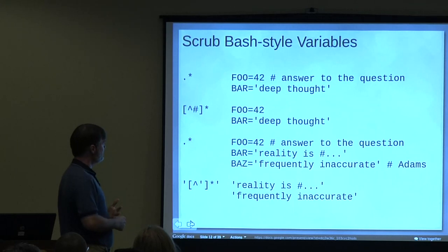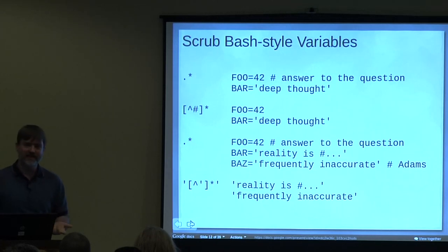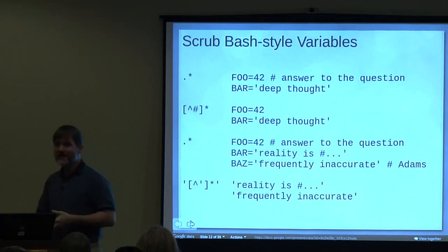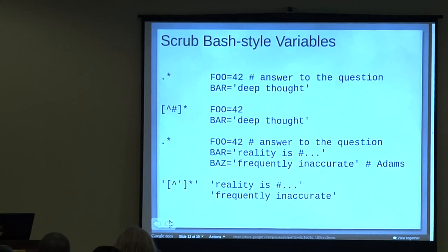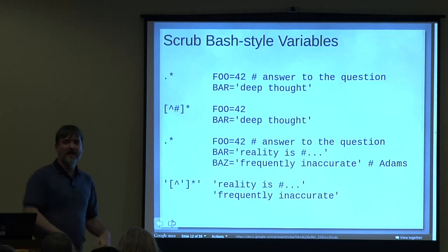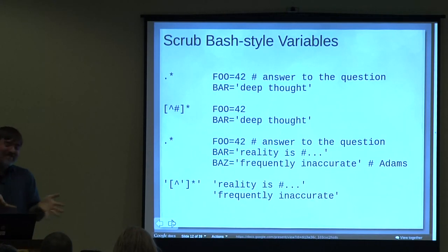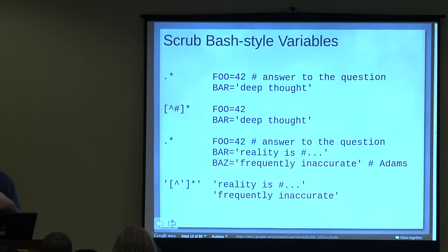Our second example: scrubbing bash-style variables. The backstory — when we write software and need to configure something, the simplest thing might be to have a single config file using bash-style key-value pairs. For your bash scripts you can just source the file; for other programs you can parse it trivially. But then you get coworkers and they mess up your config file — they start doing quoting and other things inside it. So now you've got to do a little bit more work to parse it.